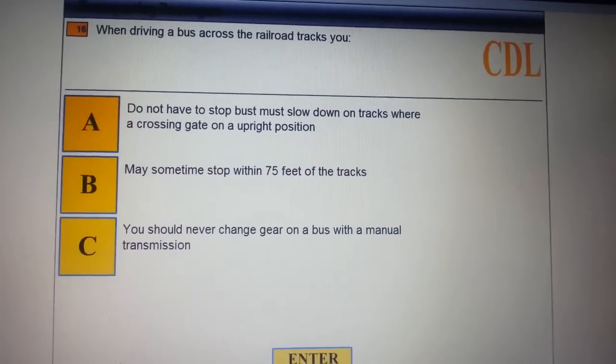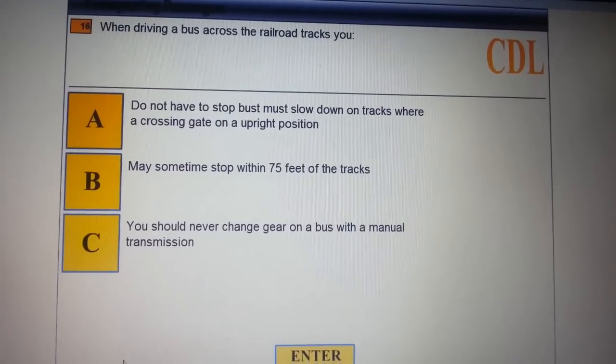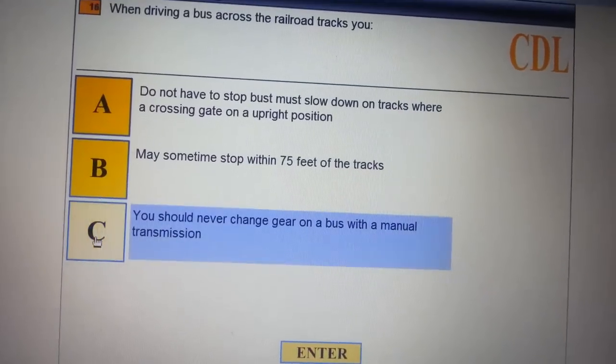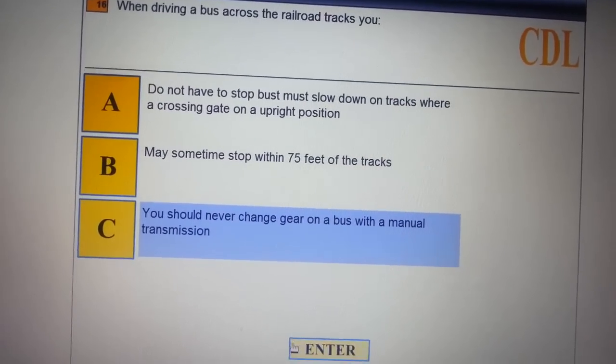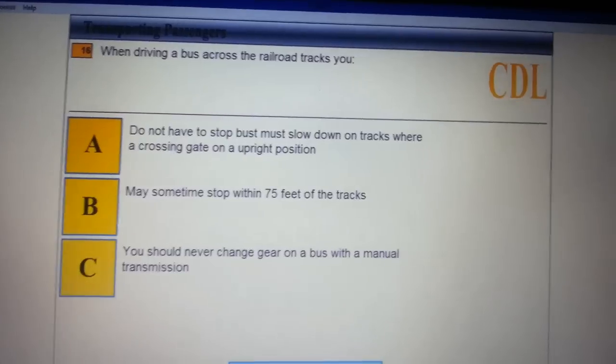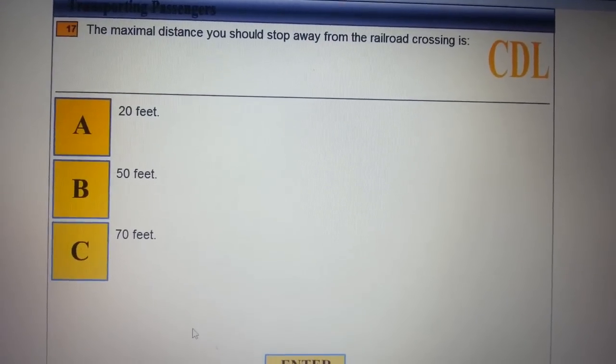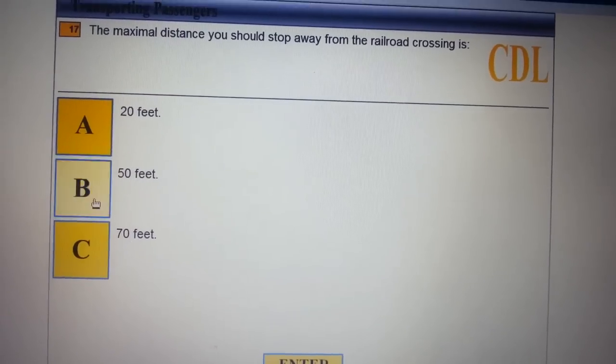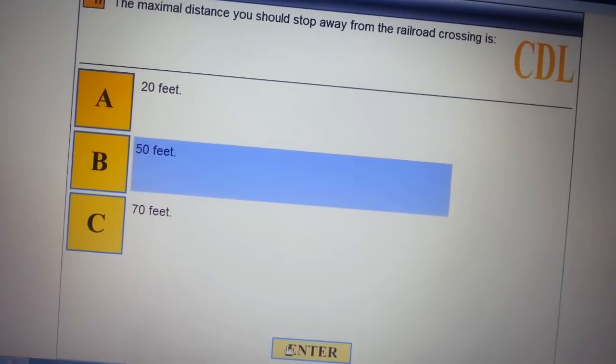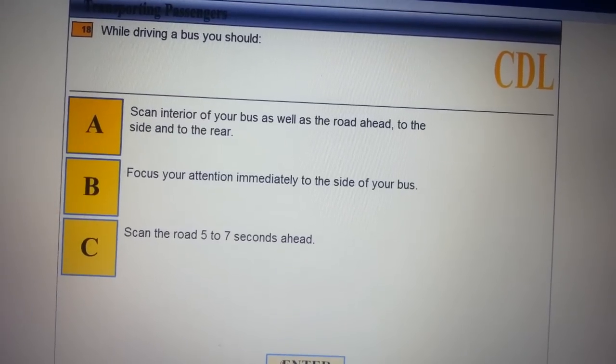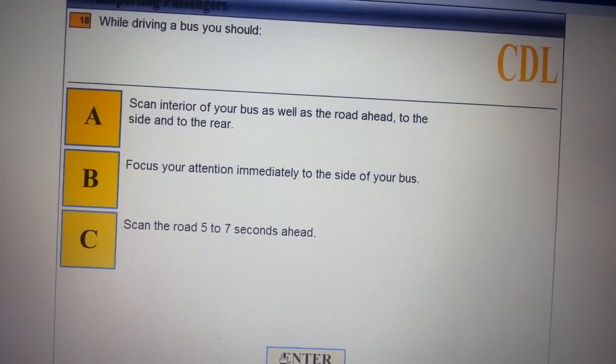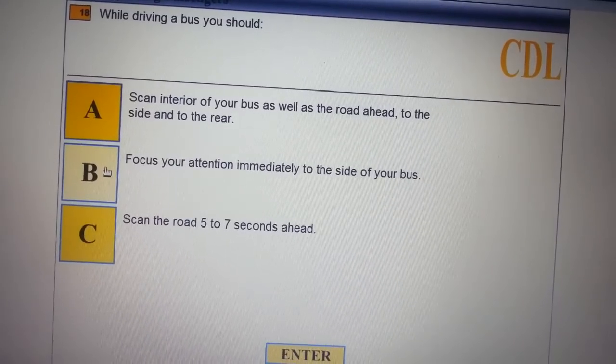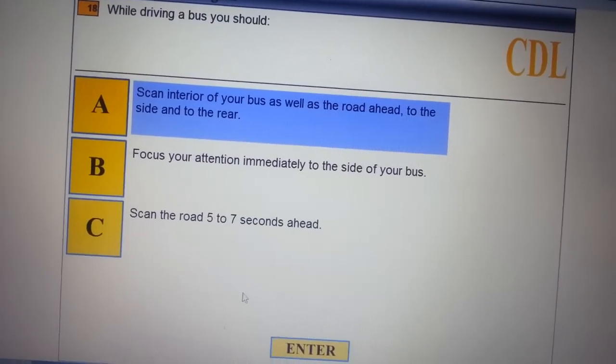We got question 16: when you drive a bus across railroad tracks and you have a manual transmission, you should never change gears. The maximum distance you should stop from the railroad crossing is 50 feet. While you drive the bus you should scan and turn your head.